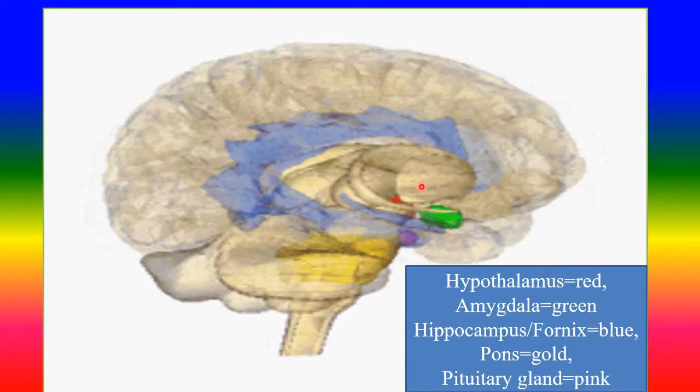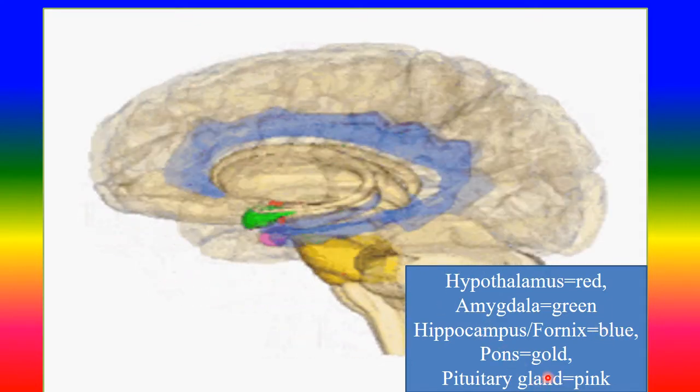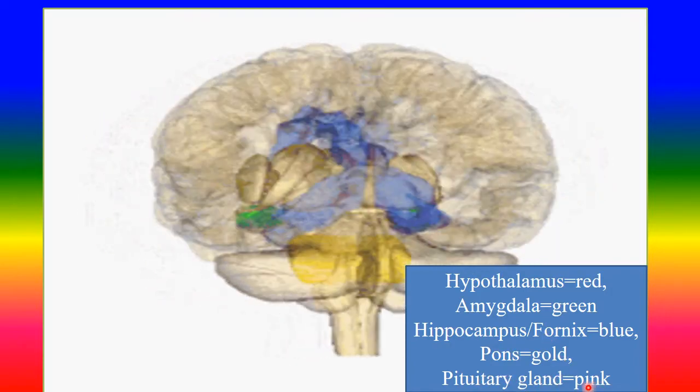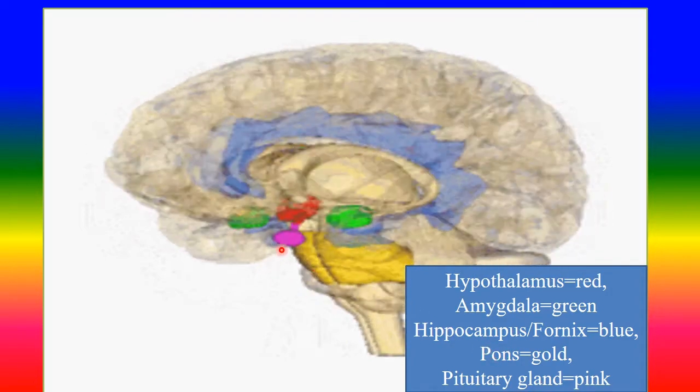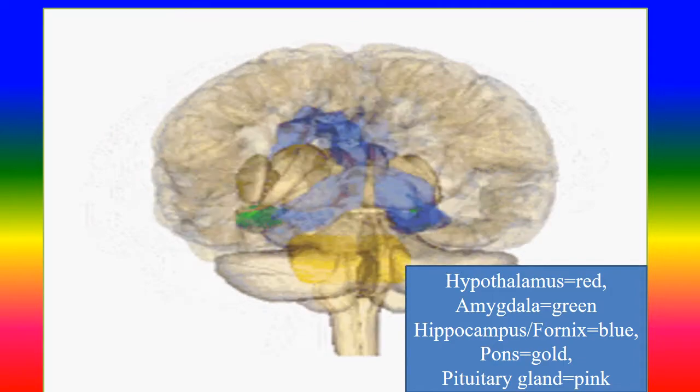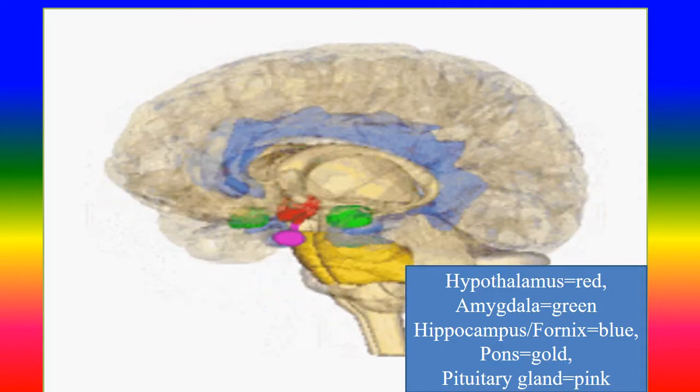This place - pons, golden color. And pituitary gland, pink. So these are all the parts of brain directly involved in stress.